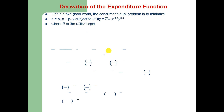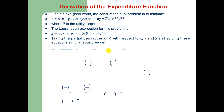We can derive the expenditure function in the following way. In a two-good world, the consumer's dual problem is to minimize the expenditure function subject to a utility constraint: U = X^0.5 · Y^0.5, where U-bar is the utility target. We set up the Lagrangian as L = Px·X + Py·Y + λ(U-bar − X^0.5 · Y^0.5).